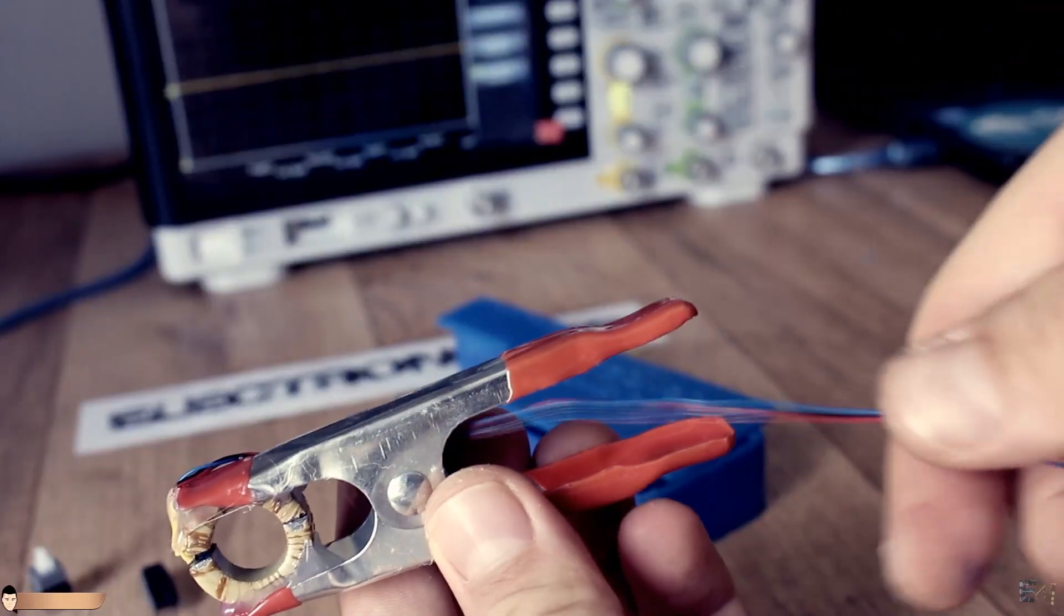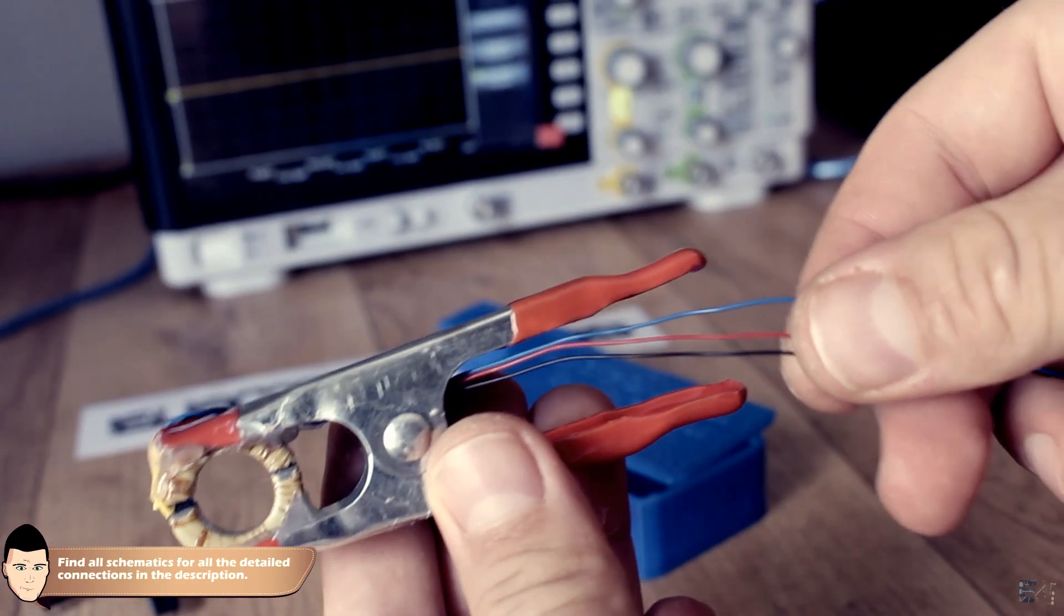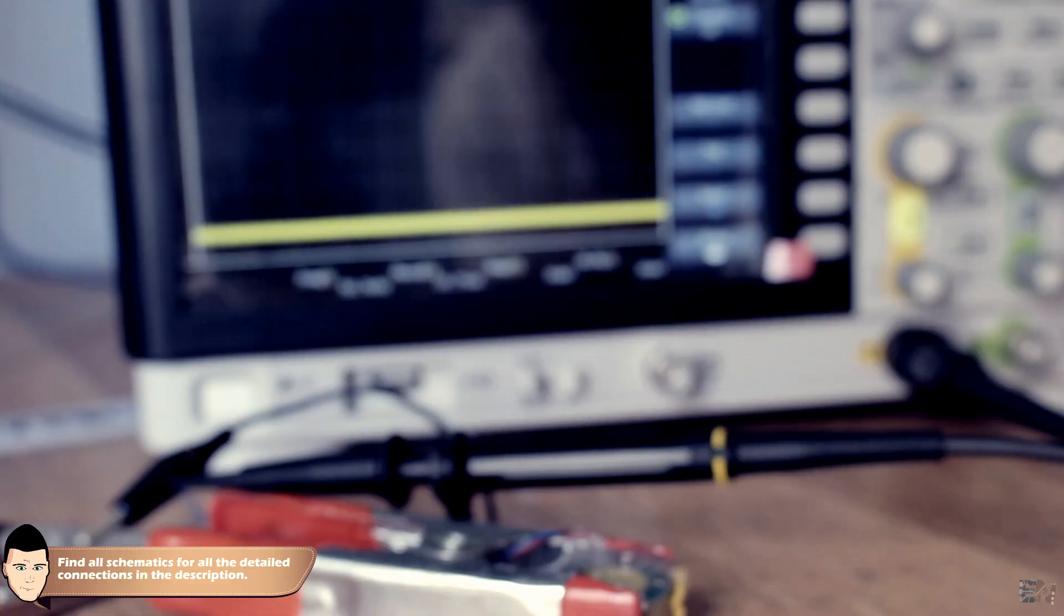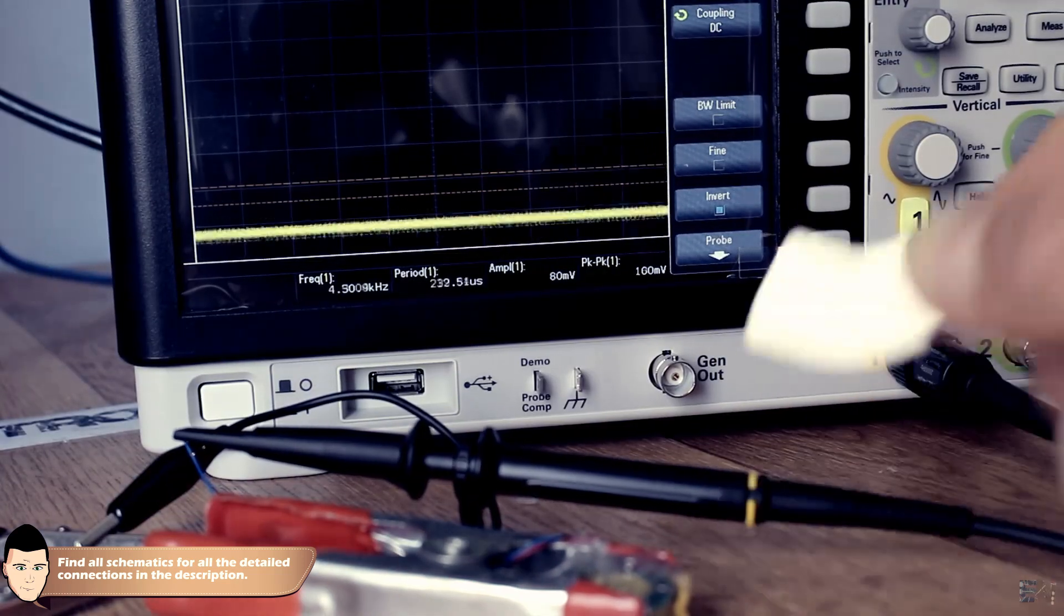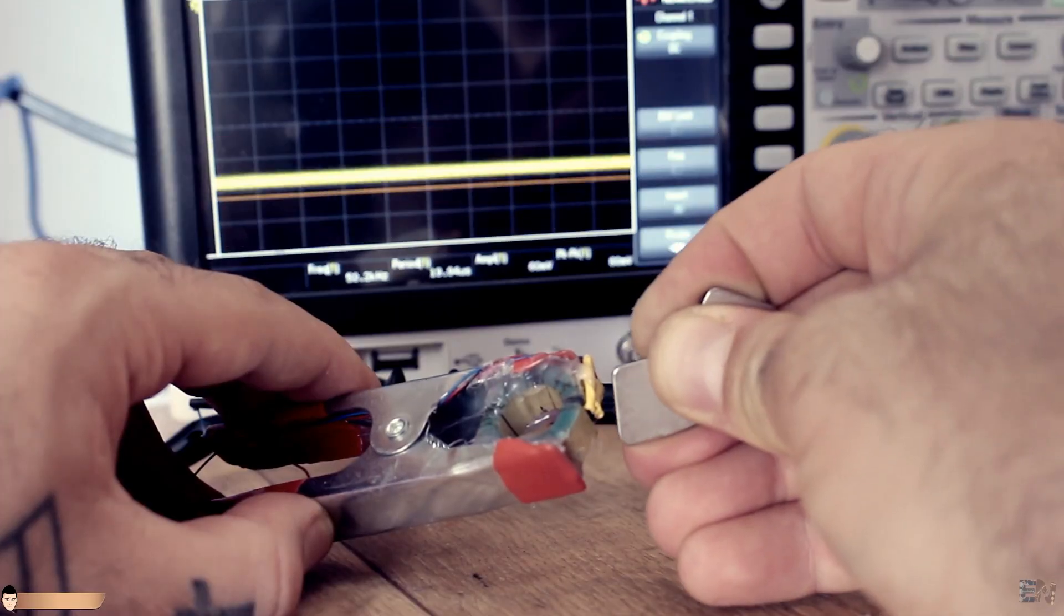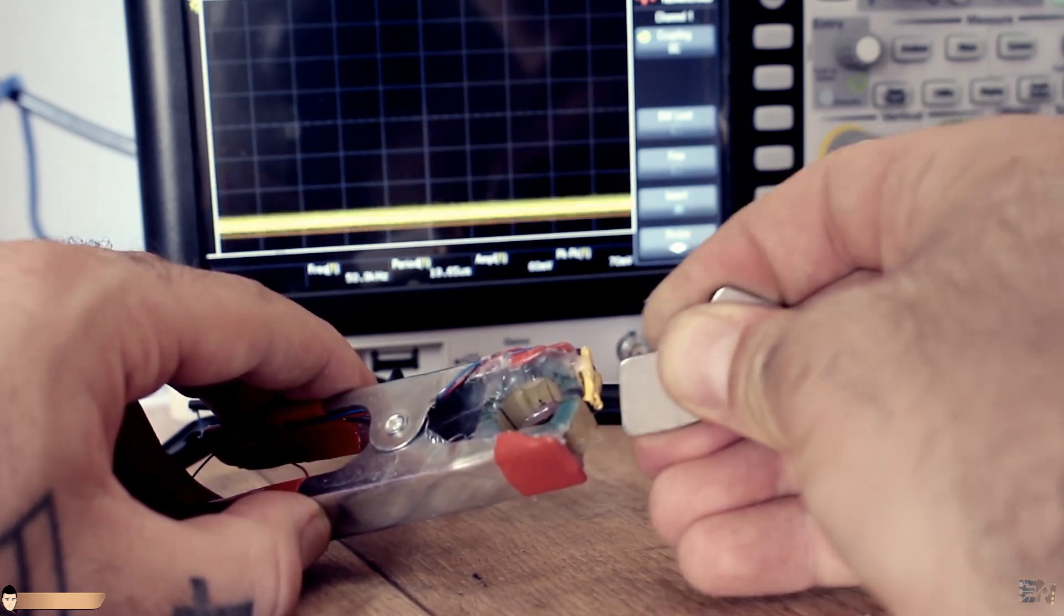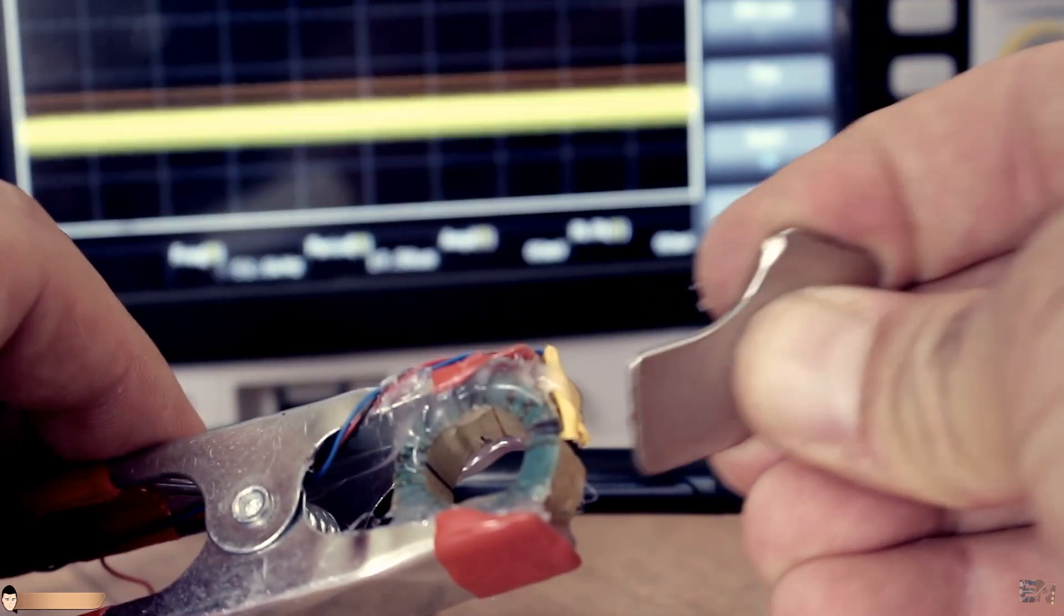I connect the sensor to ground, 5 volts and the signal output wires with black, red and blue wires. Connect the output to the oscilloscope to test it out for now. As you can see, if I approach this magnet to the sensor, the output will rise. So just like that, if the magnetic field inside of the ferrite core will increase due to the passing current through the measured wire, I could easily measure the current value.